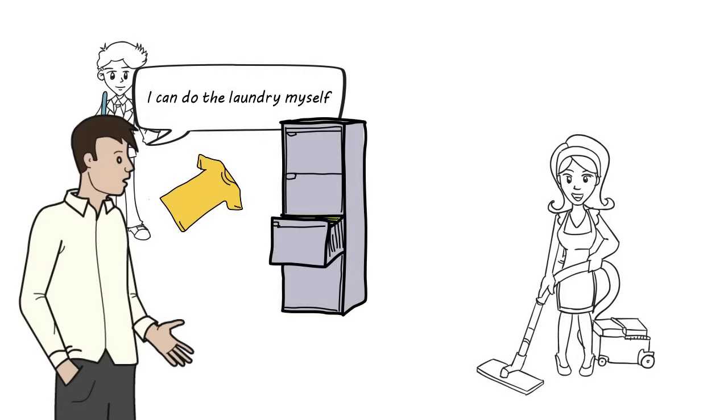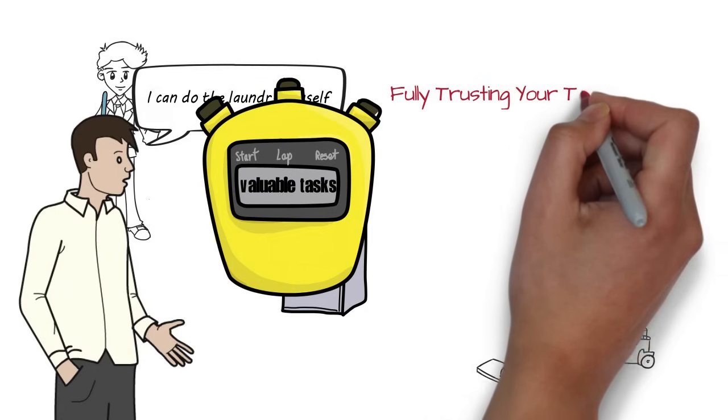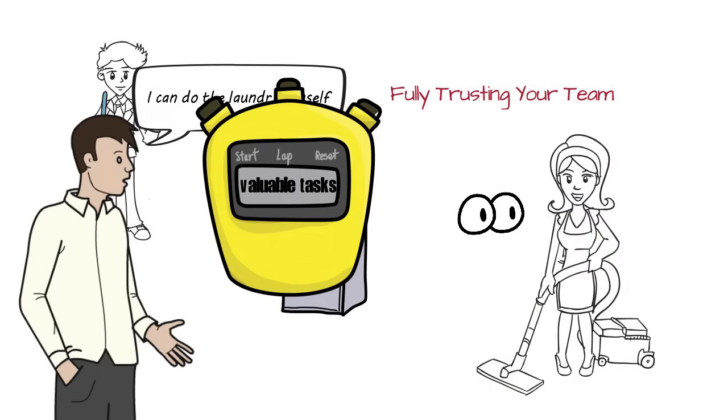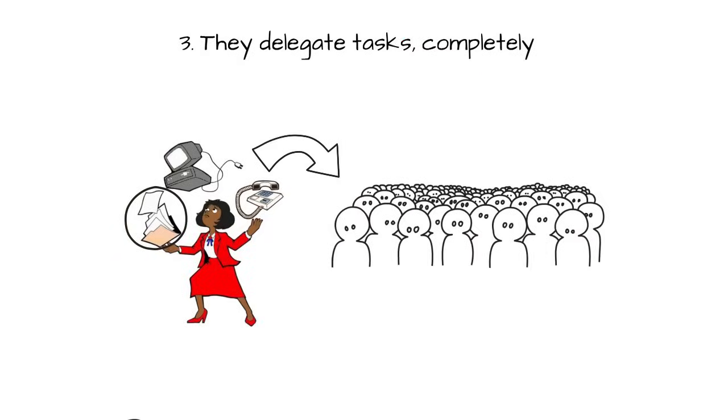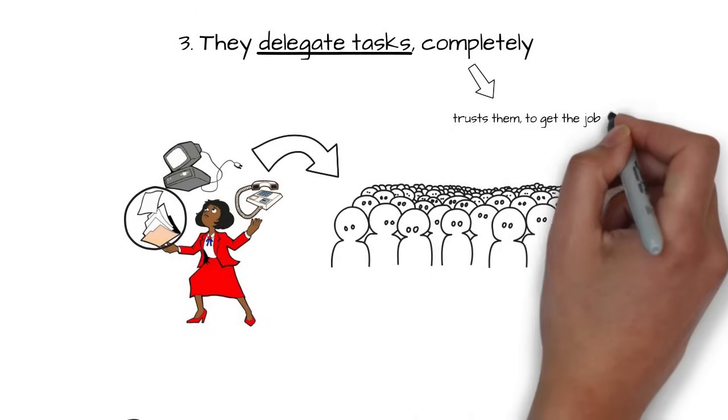For example, a maid might put your clothes in the wrong drawer every once in a while, but you should still hire her, because the extra time you get to work on more valuable tasks generally outweighs the negatives. Delegating also means fully trusting your team to do the task, without micromanaging their every move. Great leaders delegate tasks to others and trust them to get the job done.